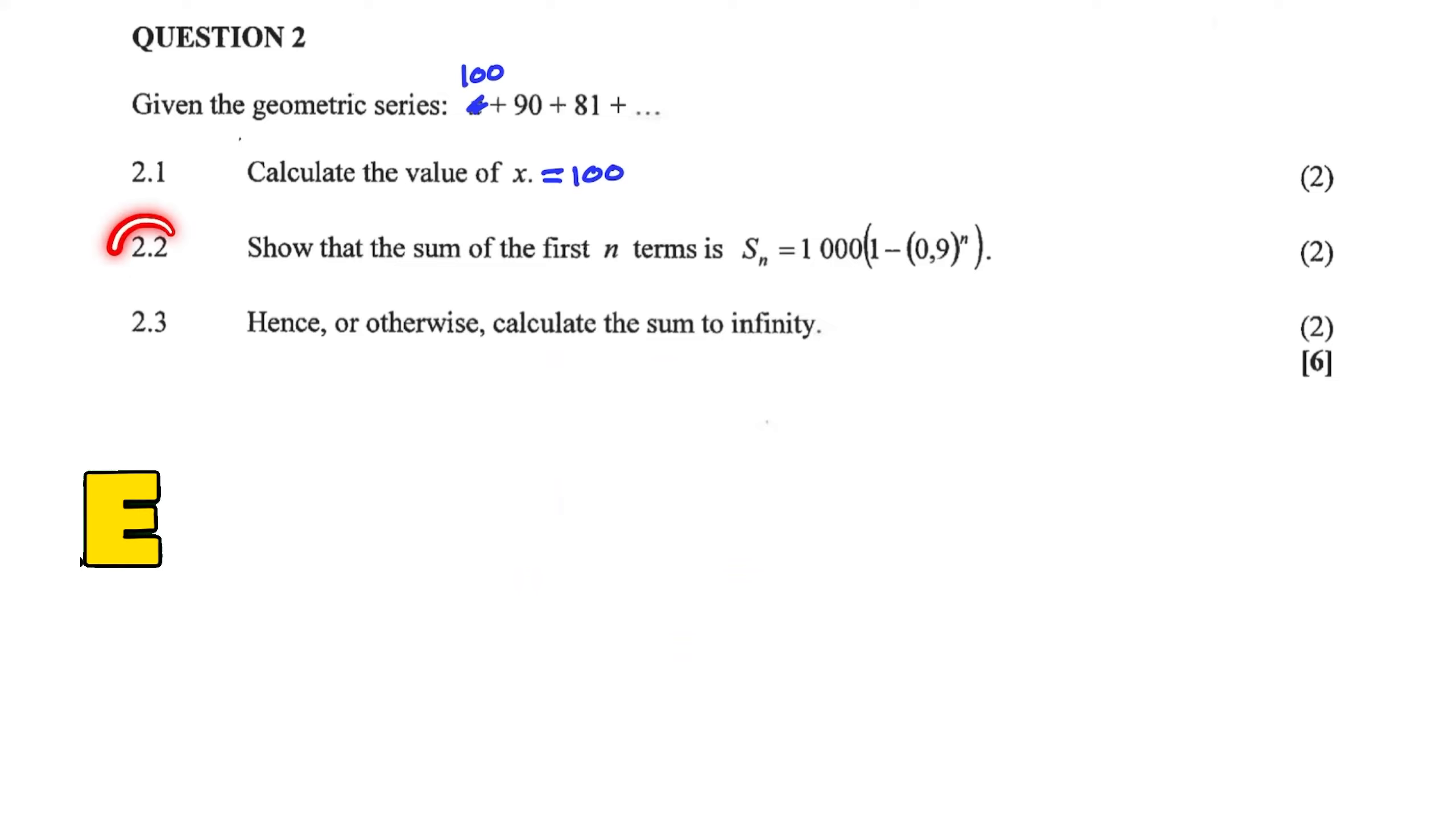So Question 2.2. Show that the sum of the first n terms is Sn equal to 1000 multiplied with 1 minus 0.9^n. And when we want to show something, we start with the equation as given on the formula sheet. So this is the equation of a geometric series.